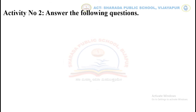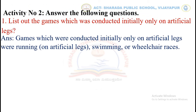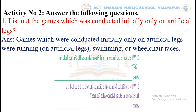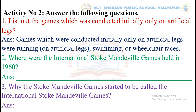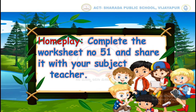Let's move to Activity number 2. Answer the following questions. List out the games which were conducted initially only on artificial legs. Games which were conducted initially only on artificial legs were running on artificial legs, swimming, or wheelchair races. In the same way, you have to continue with the remaining questions. Your home play is to complete worksheet number 51 and share it with your subject teacher.